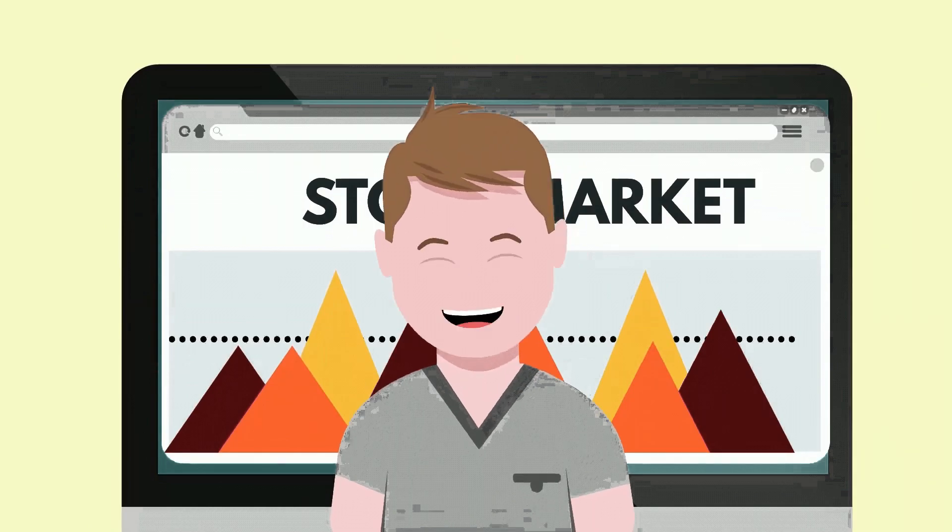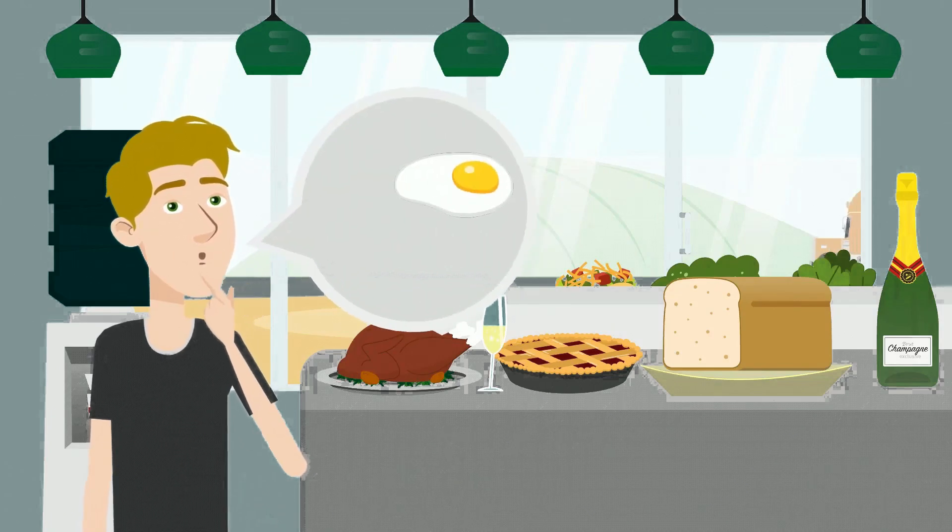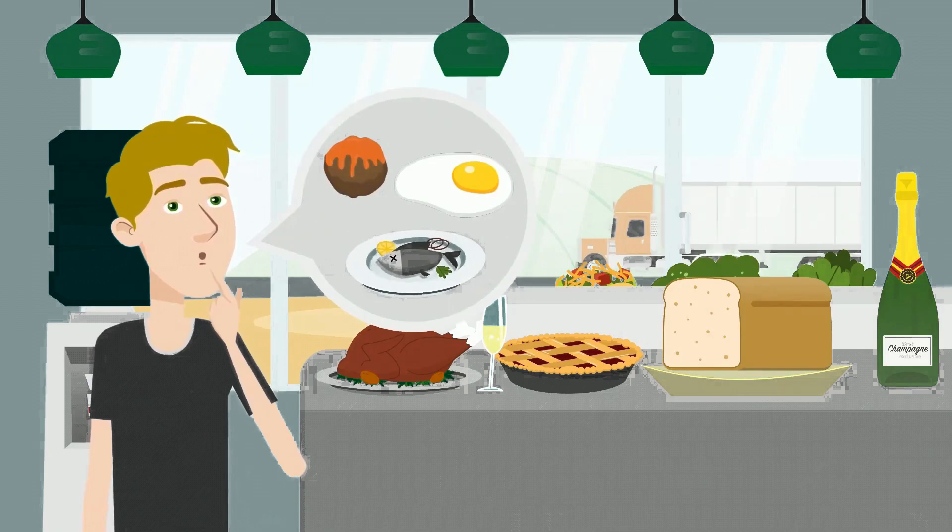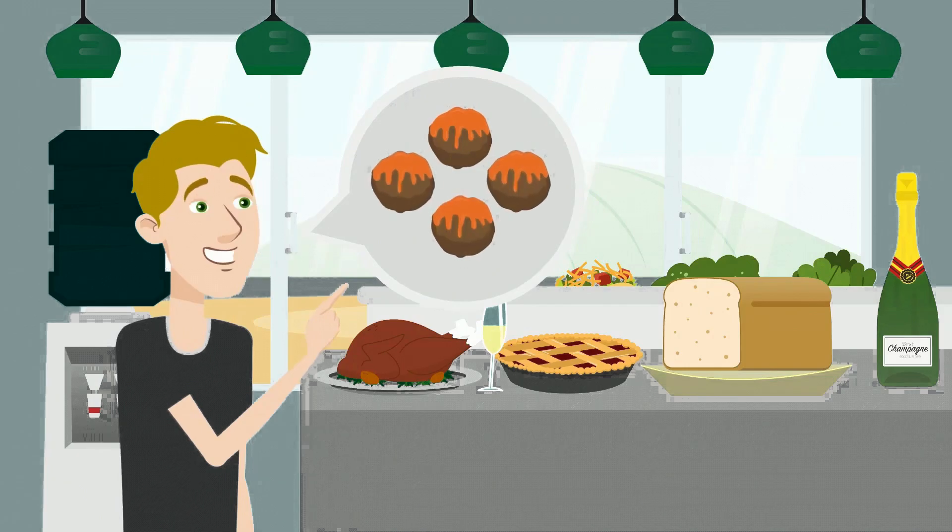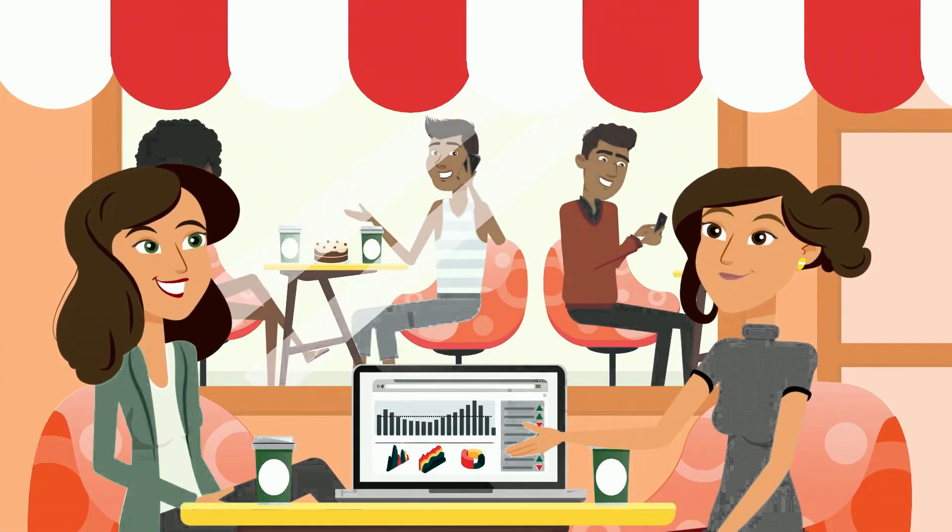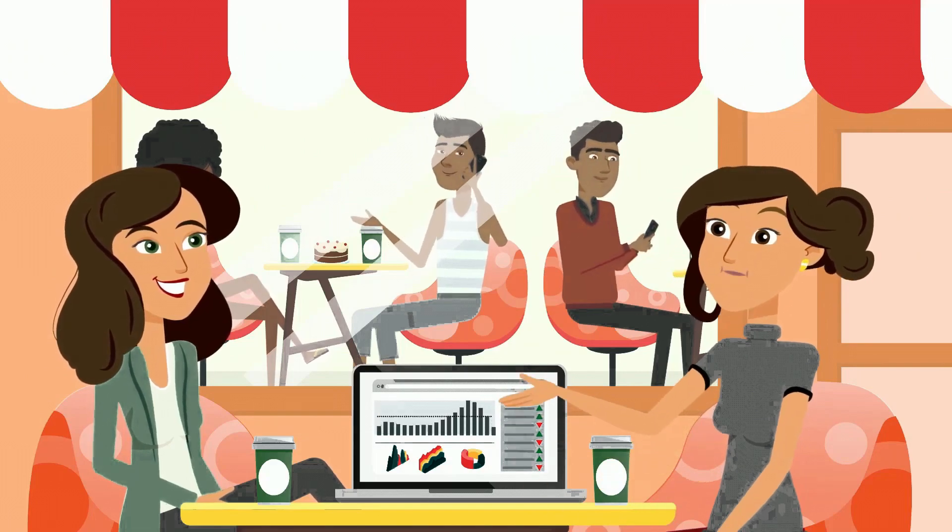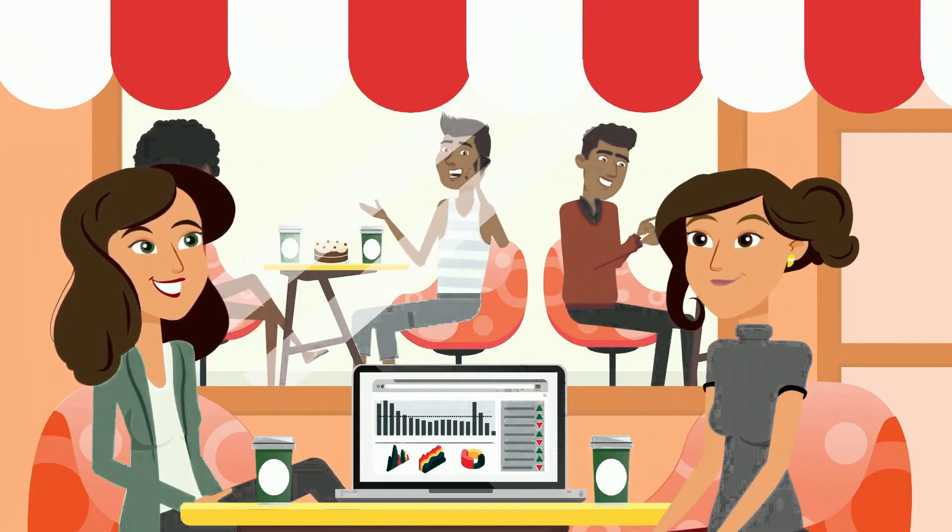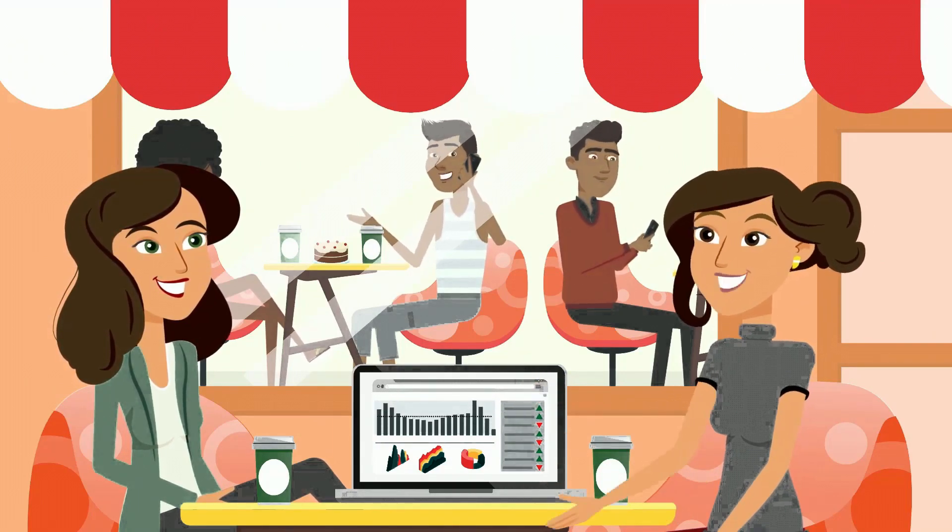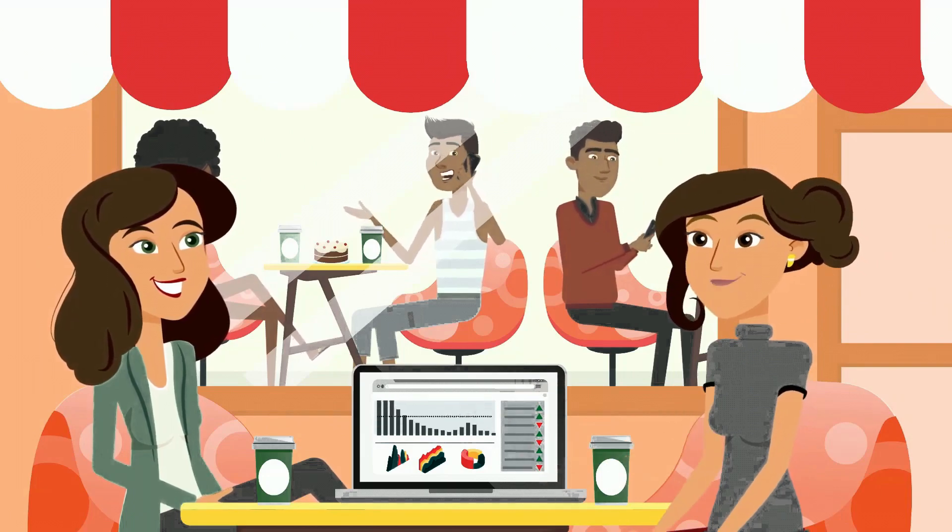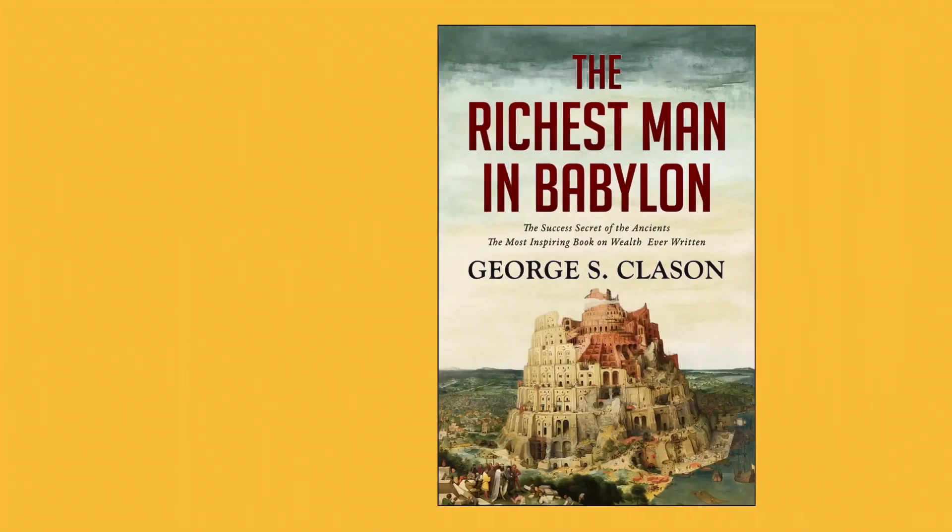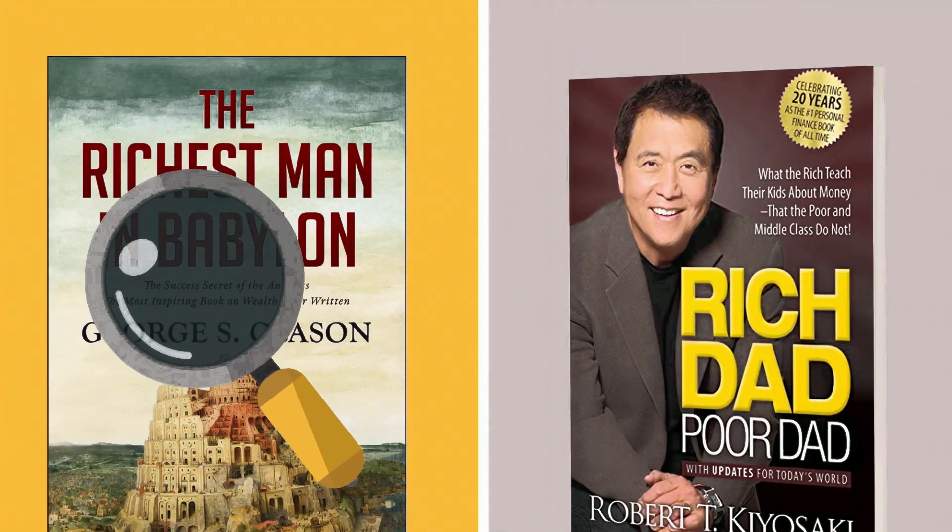As Tom reflected on his journey, he emphasized the value of continuous education. He never stopped learning about the markets, economics, and new investment opportunities. Tom knew that the world of finance was dynamic, and staying informed was key to staying ahead. Tom's story is a powerful narrative that demystifies the world of investing. It shows that financial success is not the domain of a select few with insider knowledge or extraordinary luck. Instead, it is achievable for anyone willing to learn, apply disciplined investment strategies, and remain patient through the ups and downs of the market. As we conclude this series, Tom's journey stands as a beacon of inspiration. It is a clear message that with the right approach, dedication, and adherence to sound investment principles, the goal of financial freedom and success is within reach.